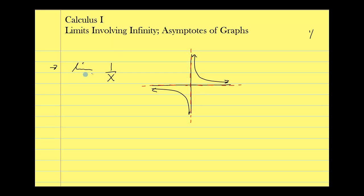Now instead of taking the limit as x approaches 0, we're going to take the limit as x approaches infinity. As x approaches infinity, I'm going further and further out in the x direction, and the y values are going closer and closer to the x-axis but will never cross it. The value of x in the denominator is getting larger and larger — 1 over 10, 1 over 1,000, 1 over 1,000,000 — this number is getting smaller and smaller and approaching 0. So this limit is 0. I have a fixed numerator and a denominator increasing without bound, giving an overall fraction going toward 0. The limit as x approaches infinity of 1 over x is equal to 0.